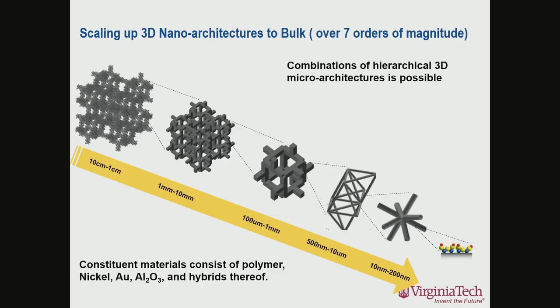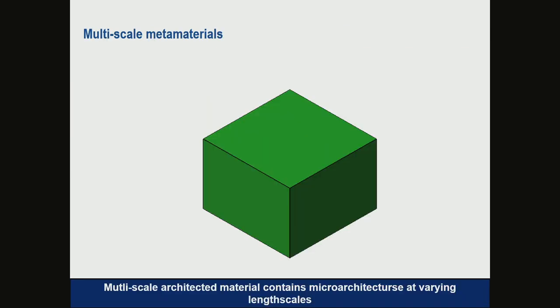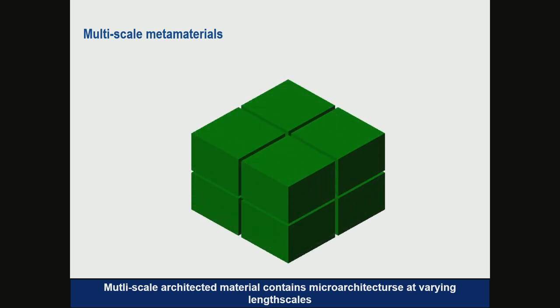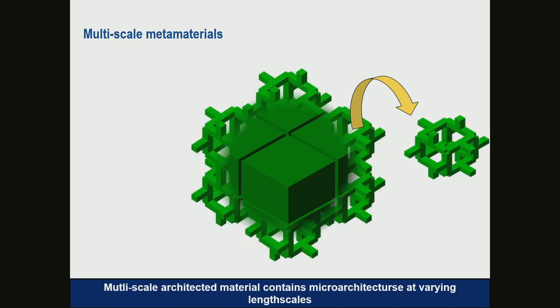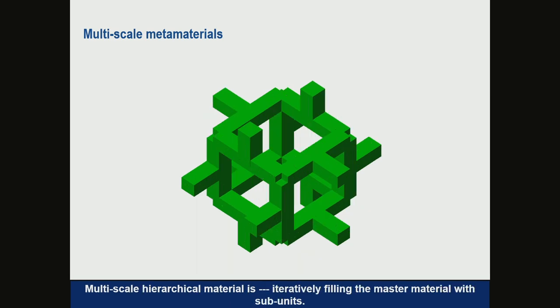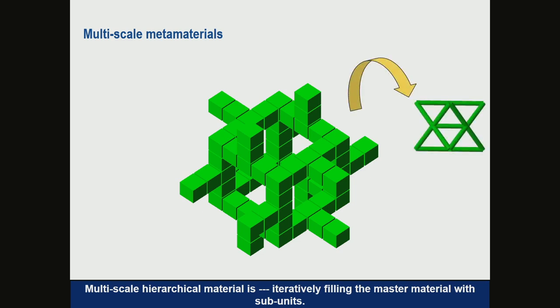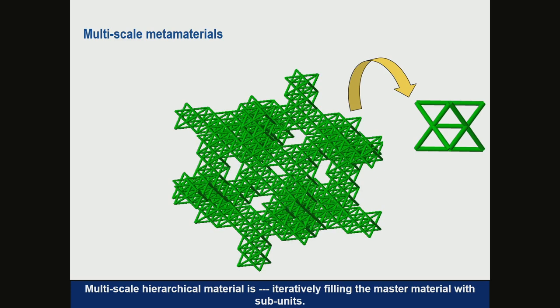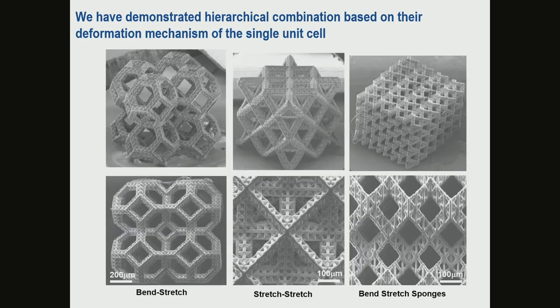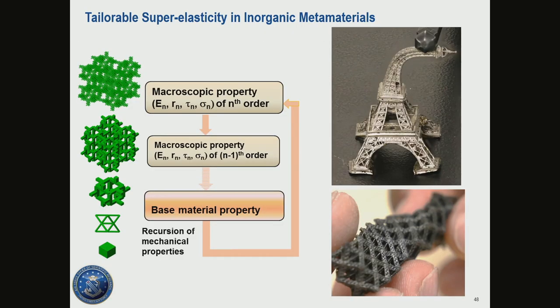We have been developing an algorithm that allows embedding different architectures inside metal materials. You take a bulk material, divide it into a periodic array, and insert one unit cell at each position, giving a first-order periodic lattice. Then you can zoom into the unit cell and recursively divide it into smaller quadrants, filling each with a different type of unit cell — mixing and matching topologies to achieve different combinations. Each combination gives a unique structural material behavior. We have an Air Force project looking at twistability and bendability for inorganic materials by designing these feature sizes across different hierarchical levels.